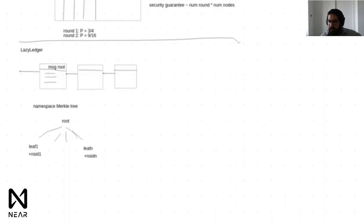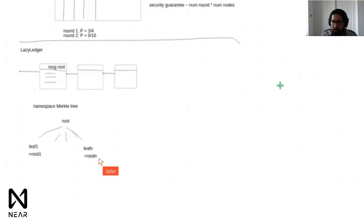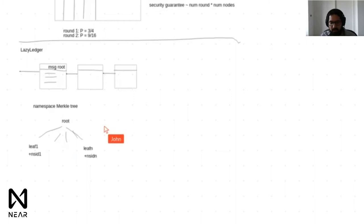In a Merkle sum tree, each transaction has extra metadata — like how many fees it pays. When hashing an internal node, you concatenate this extra data. In the Merkle sum tree that's the fee amount; in the namespace Merkle tree it's the namespace ID. As the root you get a commitment — in the sum tree case it's a commitment to all fees collected in the block, allowing fraud proofs if a miner collected too many fees. In our case it enables range proofs for messages from a particular namespace.